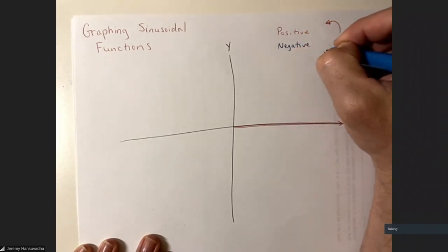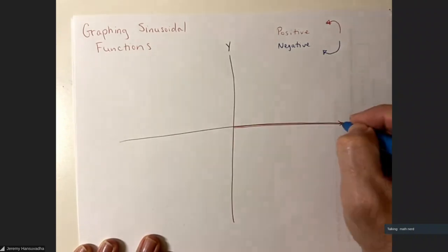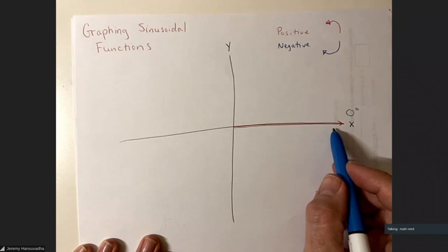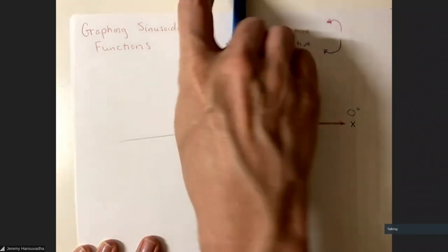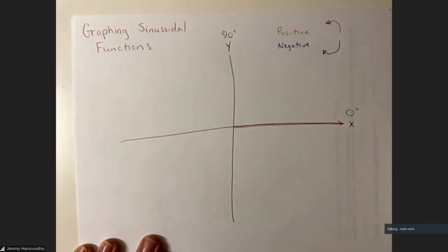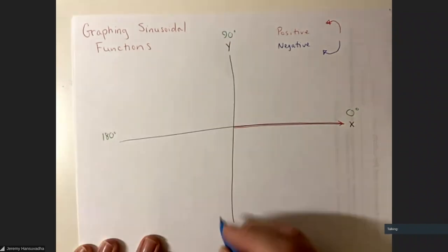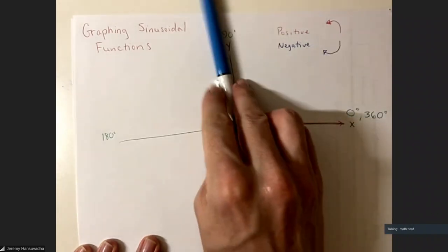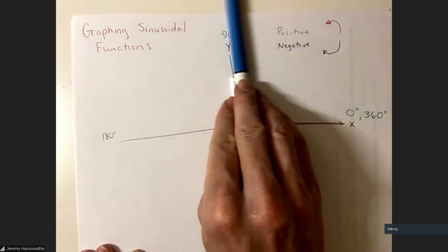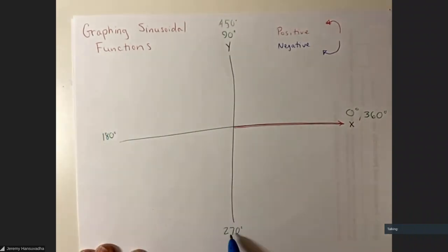Negative angles go in the clockwise direction. With that said, let's look at some basic angles. Zero degrees is the positive x-axis. A rotation of 90 degrees would be here, 180 is 90 plus another 90, then 270, and 360 brings us back to zero. Continuing: 450 would be here, 540 over here, 720, and so on.